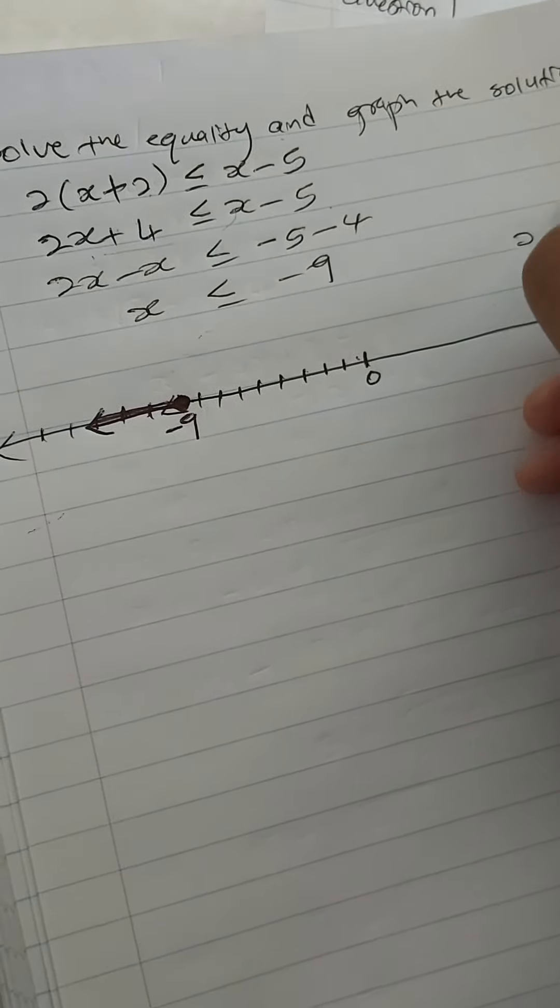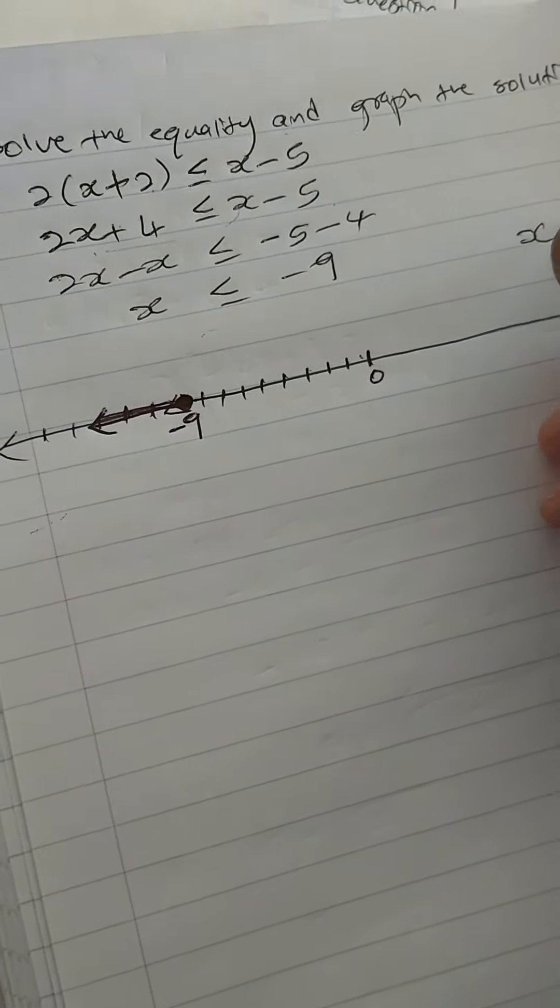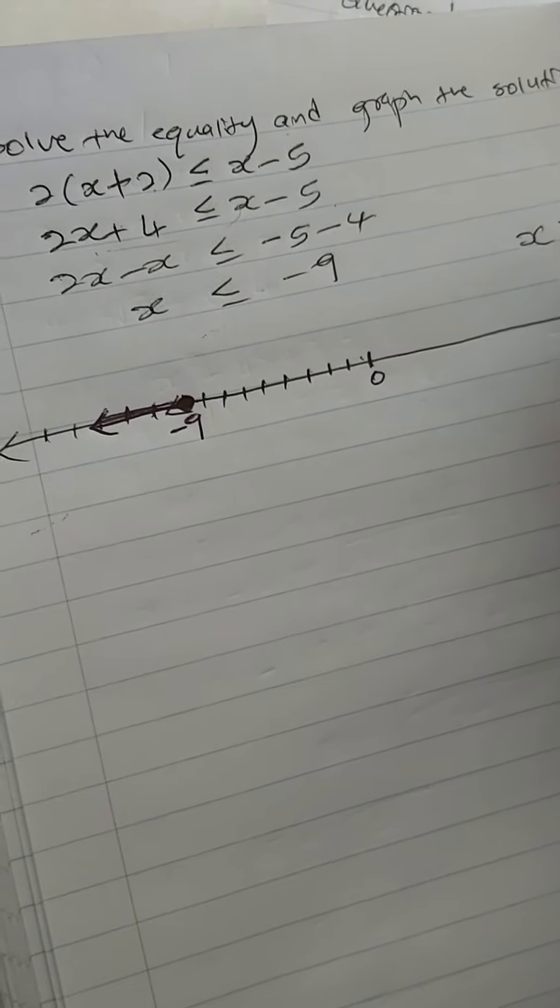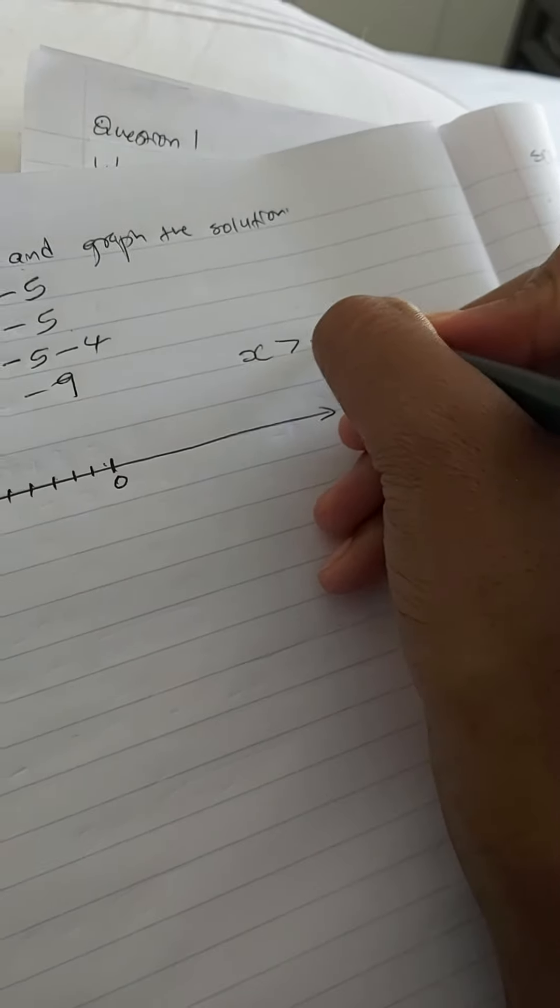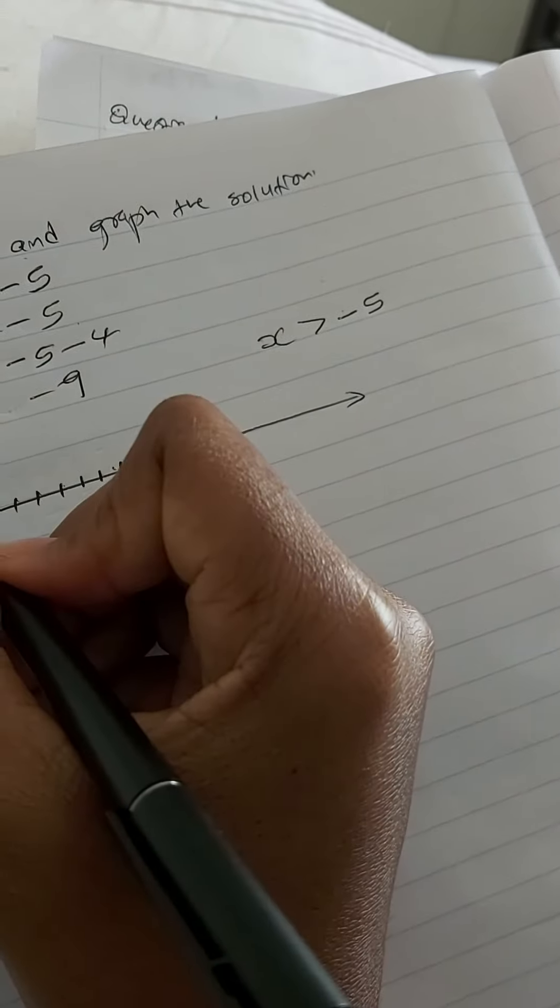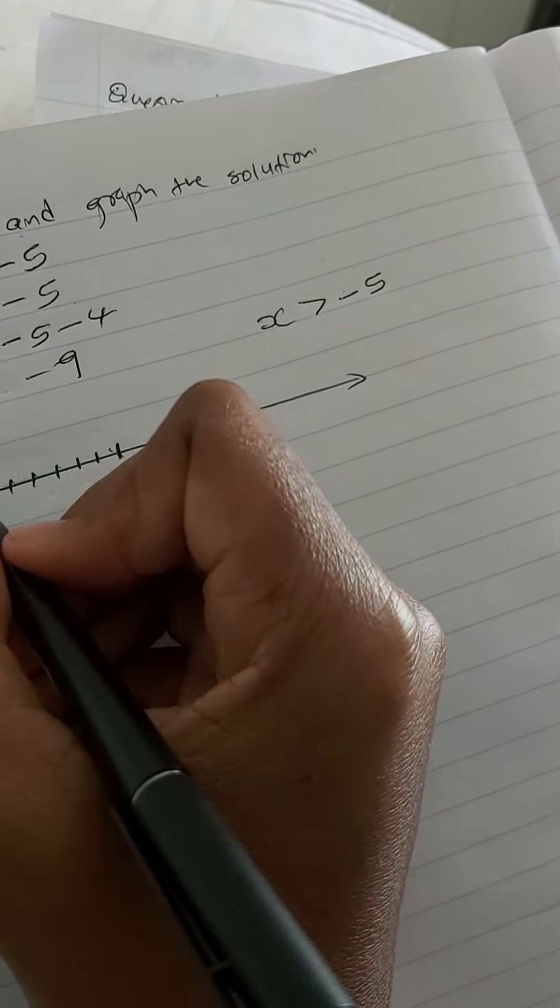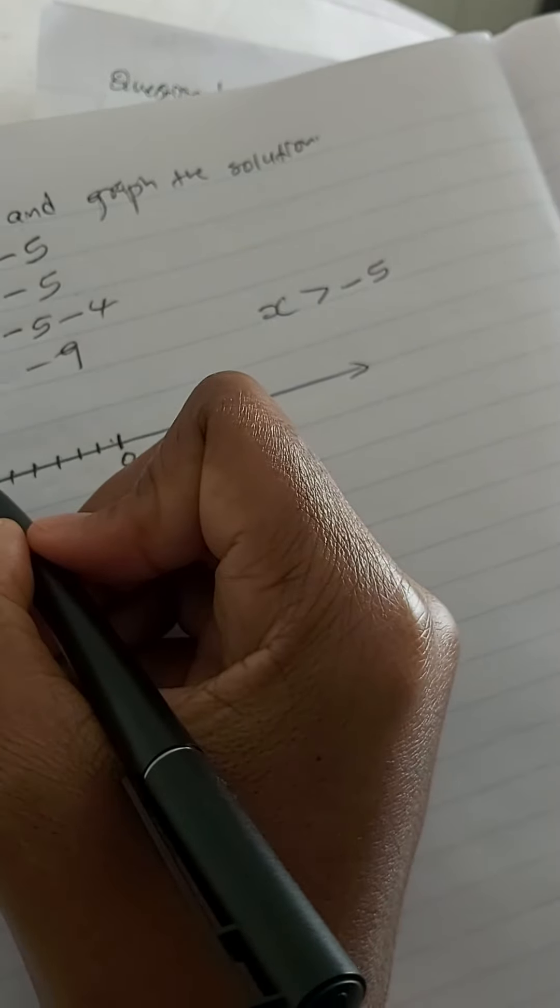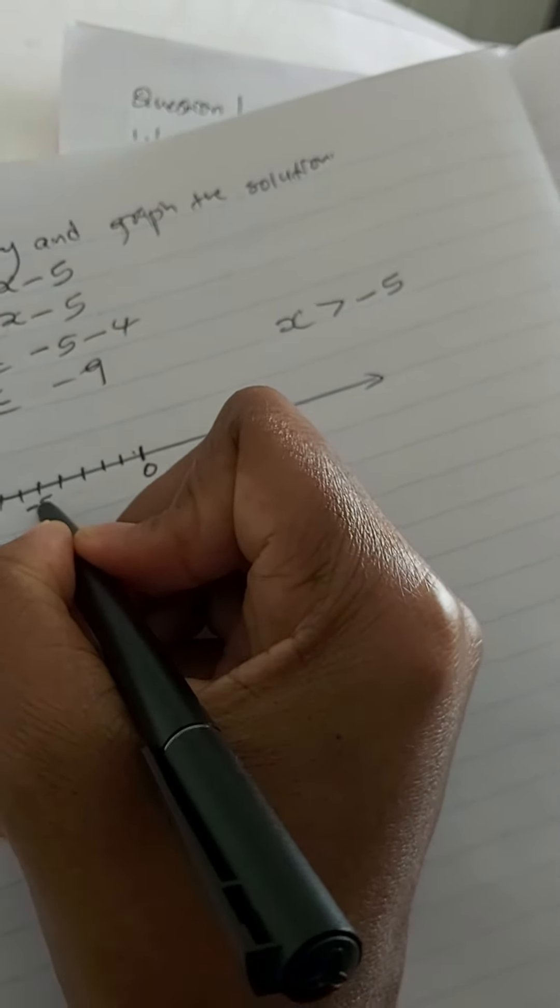If, for example, the answer was x is greater than minus 5 for argument's sake, we're gonna have on our number line minus 8, minus 7, minus 6, minus 5 is gonna be here.